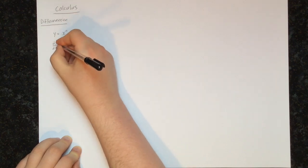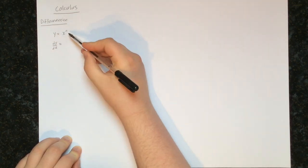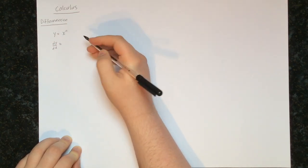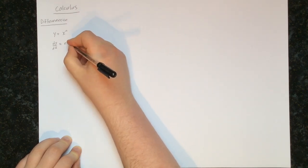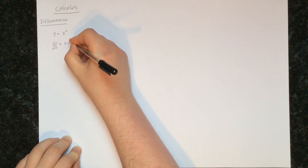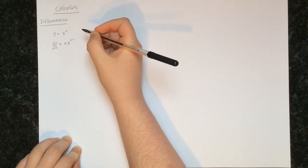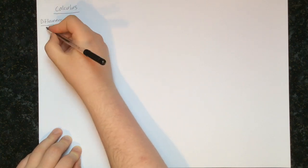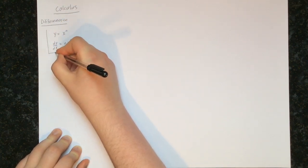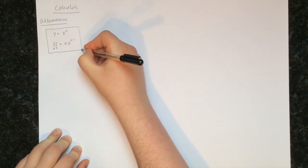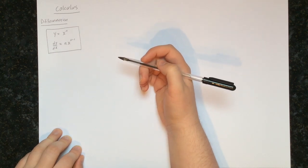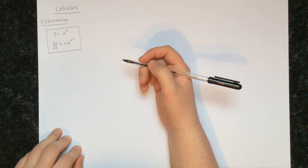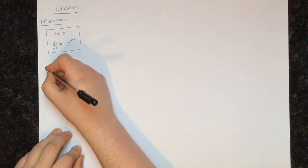The way to find the derivative is: take the power of x, which is n, multiply by that number, and then reduce the power of x by 1. So dy/dx equals nx to the power of n minus 1. This is our general rule — our formula — to calculate the derivative. It looks complicated now, but it will become a lot more apparent when we go through a few examples.